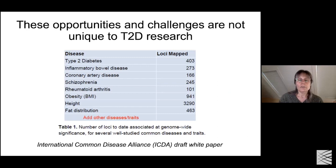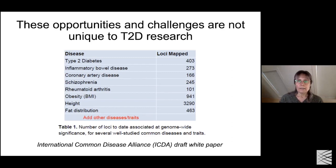There are many complex diseases for which many genetic association signals are being identified, and we need to know the effector genes in order to understand how these diseases develop. A table from the ICDA white paper makes the point that many other complex diseases could benefit from such an effort to aggregate and integrate these types of data.